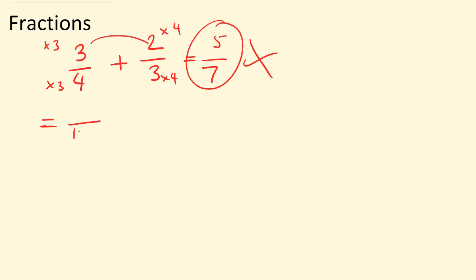So three times four is 12, and three times three is nine. And we are adding: three times four is 12, and two times four is eight. Now both denominators are the same. Now we can add the numerators: the denominator stays the same at 12, and nine add eight is 17. When you get an answer like 17 over 12, we can see that the numerator is bigger than the denominator, so we have an improper fraction.